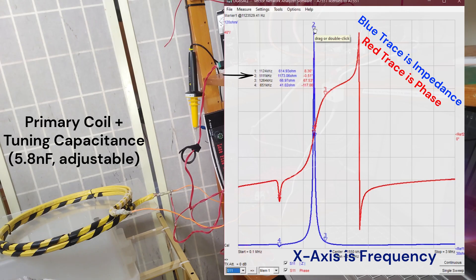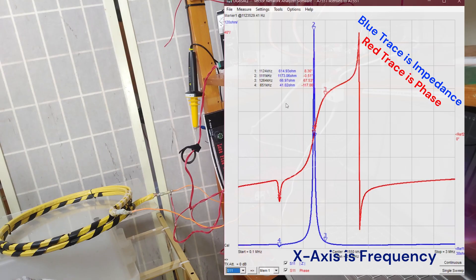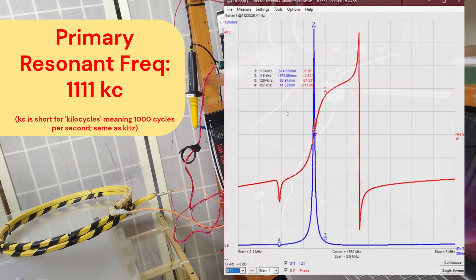What we want to know here is that the primary tank circuit at 1111 kilocycles is what we'll want to be matching or compatible with the secondary circuit. Now removing primary to do the same thing with just the secondary in isolation.